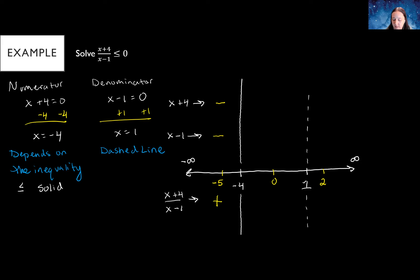Move to the middle section where x = 0. Plugging zero into x + 4 gives 0 + 4 = 4, which is positive. Plugging zero into x − 1 gives 0 − 1 = −1, which is negative. A positive divided by a negative is negative. Then move to the next section and plug in 2. Two plus four is six — positive. Two minus one is one — positive. A positive divided by a positive is positive.